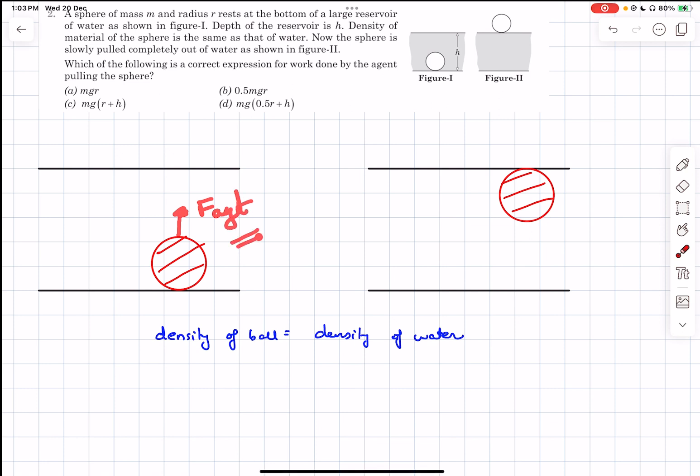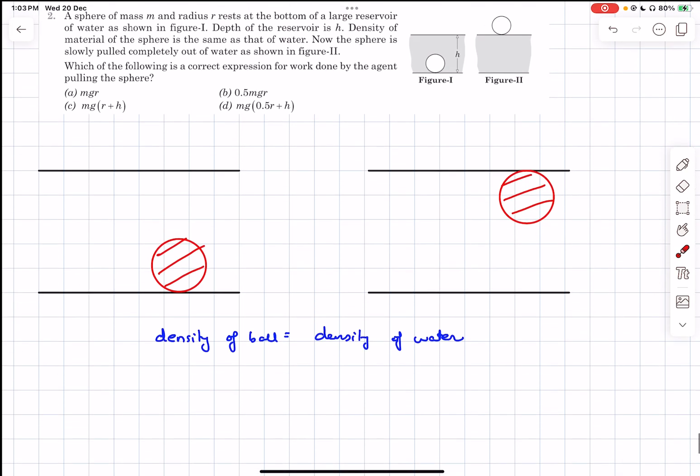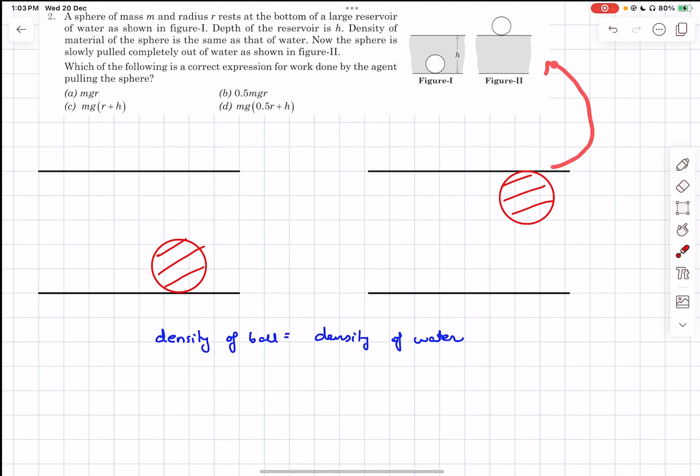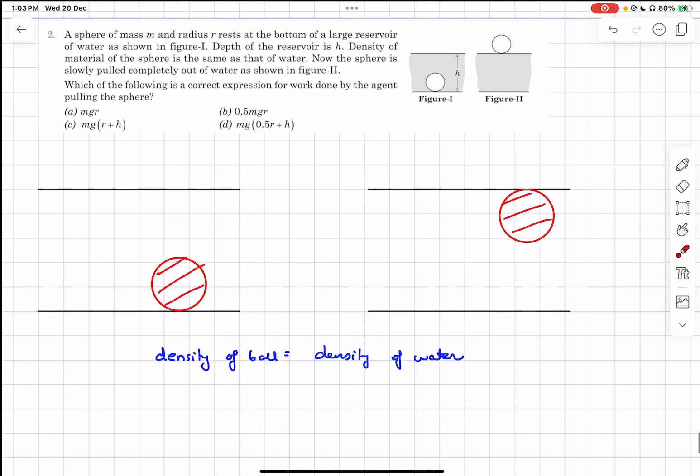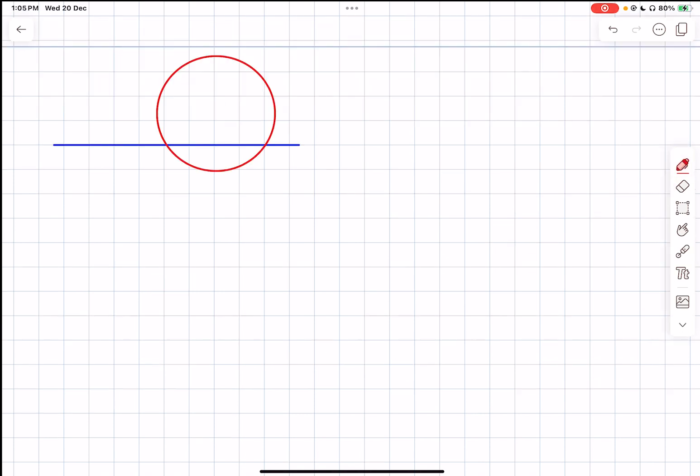So this is a basic diagram of the situation. It is given that the density of the ball is equal to the density of water. So which basically means when the sphere is completely immersed in water, the buoyancy force and the weight of the object cancels each other out. So therefore, our agent does not have to do any work to bring this sphere from this state over here in diagram one to this state over here because the F agent is simply going to be zero.